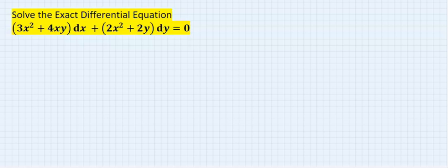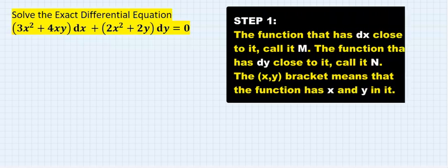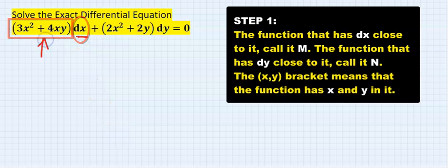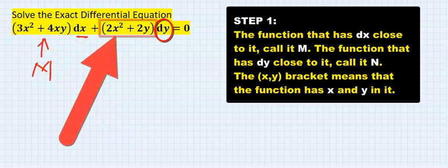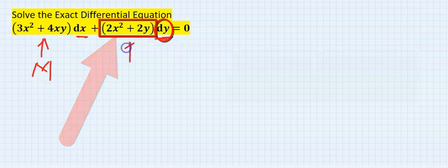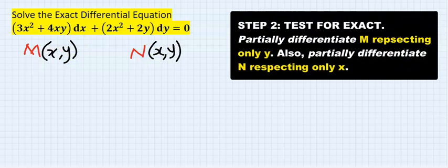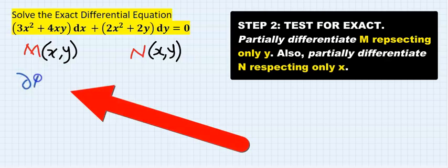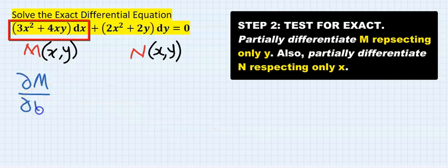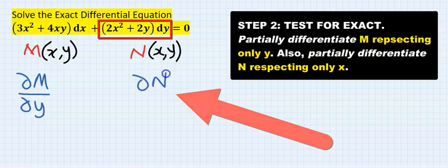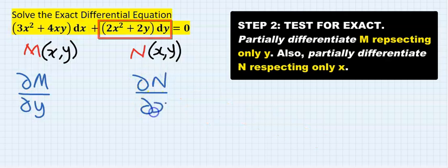For the exact differential equation: step one, the function that got the dx, call it M, and the one that got the dy, call it N — both functions having x and y in them. Step two, take the partial derivative of M with respect to y, and take the partial derivative of N with respect to x.